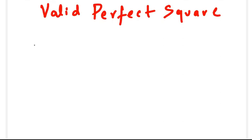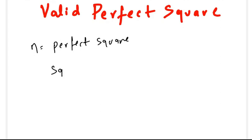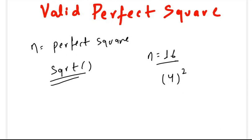The problem statement says that we are given a number n and we need to determine if n is a perfect square or not. Note that we cannot use built-in functions like square root. For example, if n is 16, which can be represented as 4 squared, we return true, but for n equals 14, which is not a perfect square, we return false.